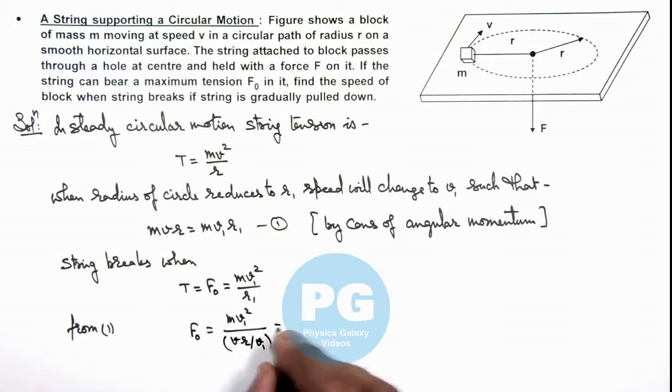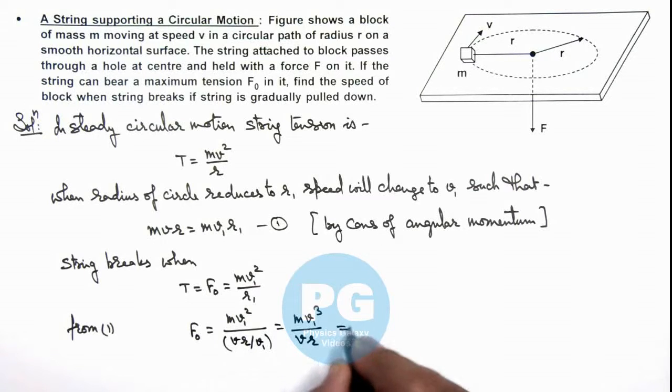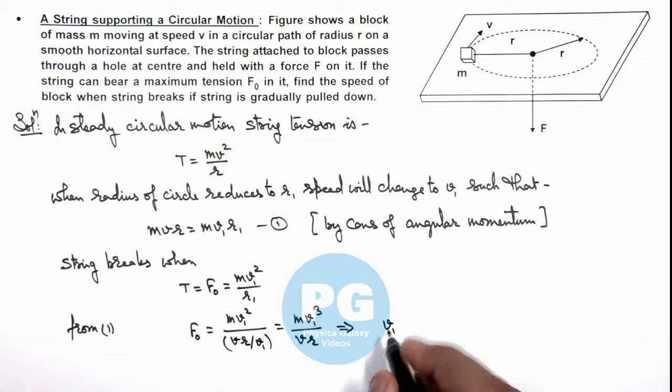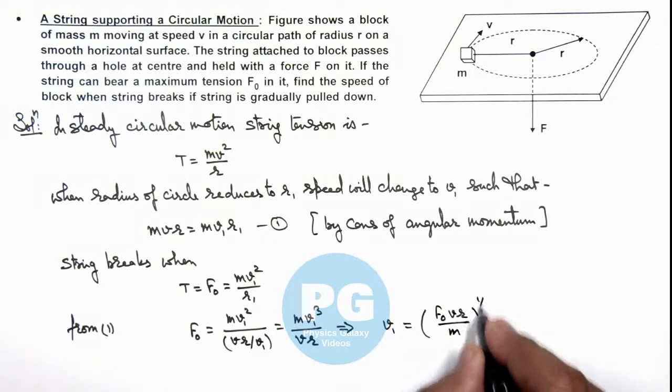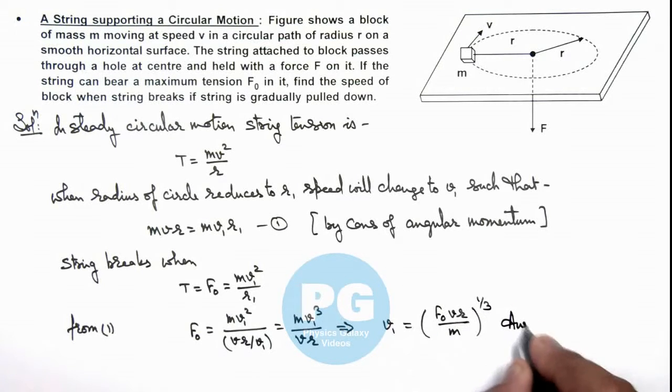Which gives us m v1 cubed divided by v r. This implies the value of v1, the speed at which string will break, is given by F_not v r divided by m, and its cube root. That should be the result of this problem.